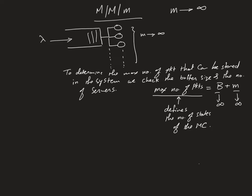Because we have an infinite number of servers and an infinite buffer, the queuing system can accommodate up to an infinite number of packets. The Markov chain starts at state 0 (no packets), state 1, state 2, state 3, and the general case goes from state n−1 to state n to state n+1, continuing up to infinity.